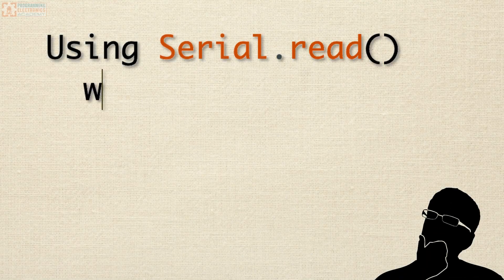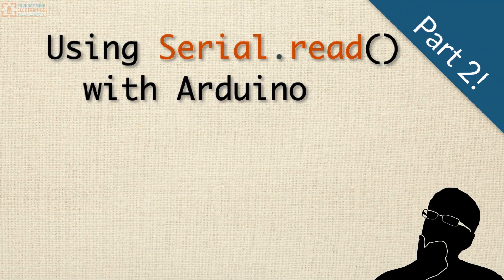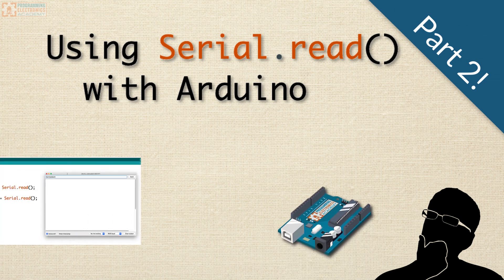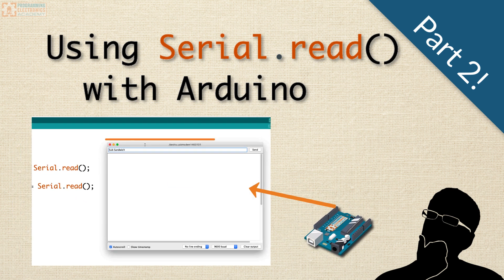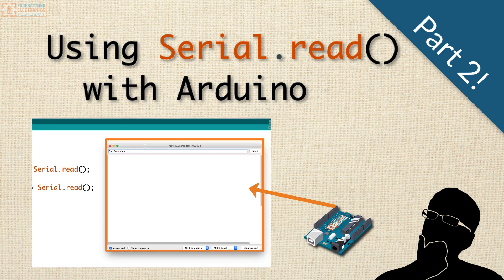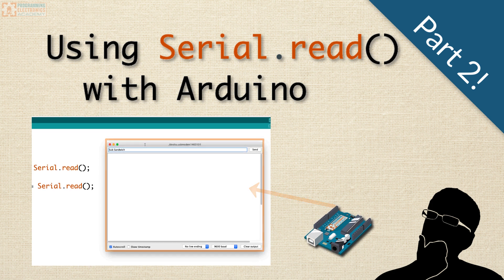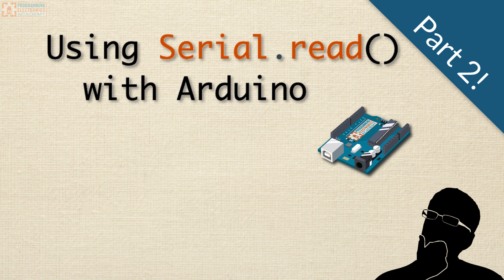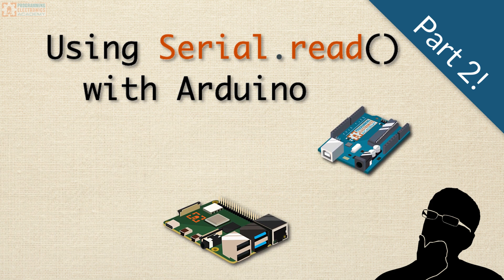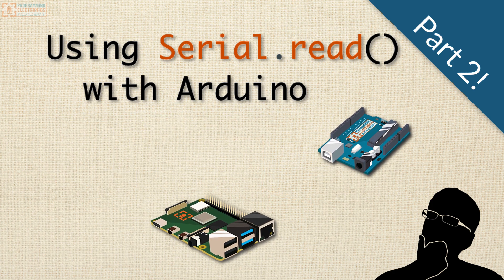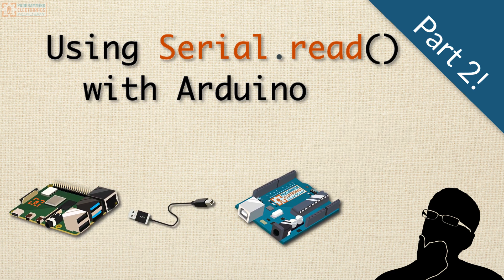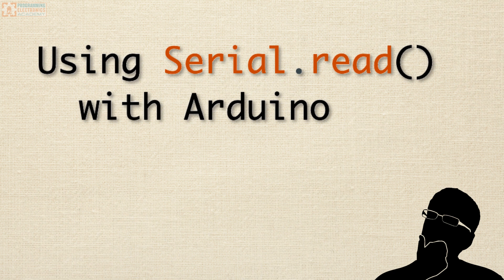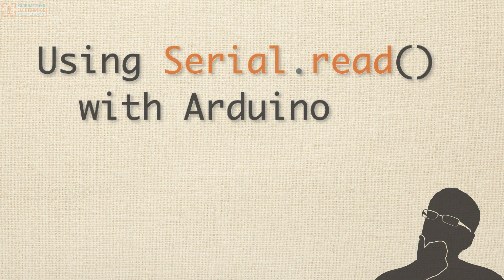Are you trying to use Serial Read to get data from a serial port to your Arduino? Maybe you're using the Arduino Serial Monitor window and sending in data, or maybe you've got a program running on your Raspberry Pi that's sending data via serial to your Arduino board. How do you use Serial Read to receive the data and piece it together correctly?